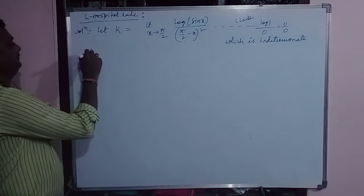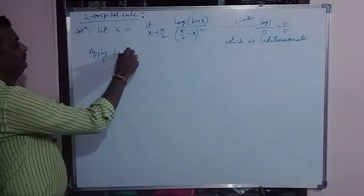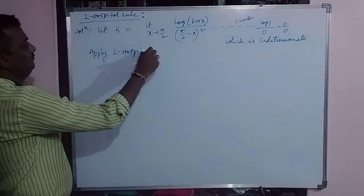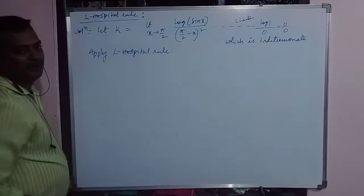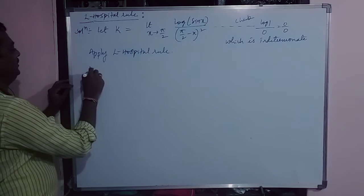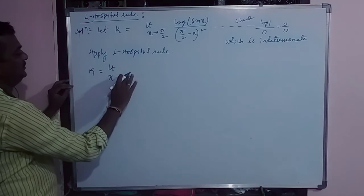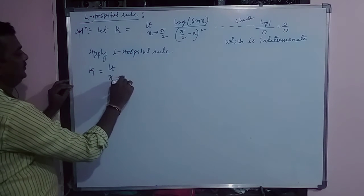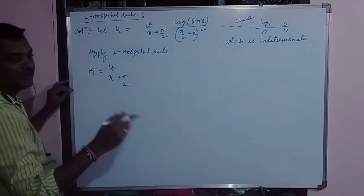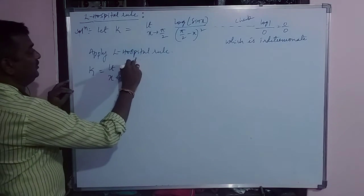Now apply L'Hospital rule. What is L'Hospital rule students? K is equal to limit as x tends to pi by 2, differentiate both numerator and denominator separately.